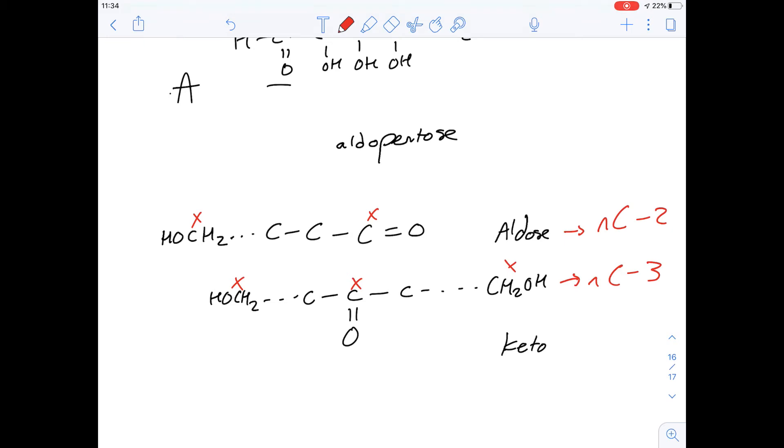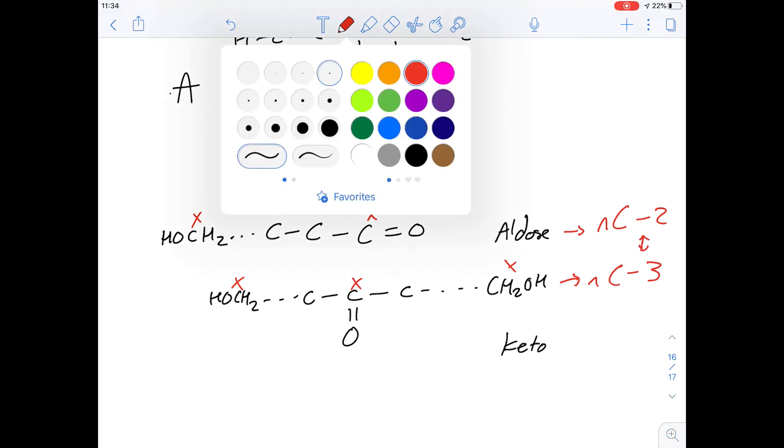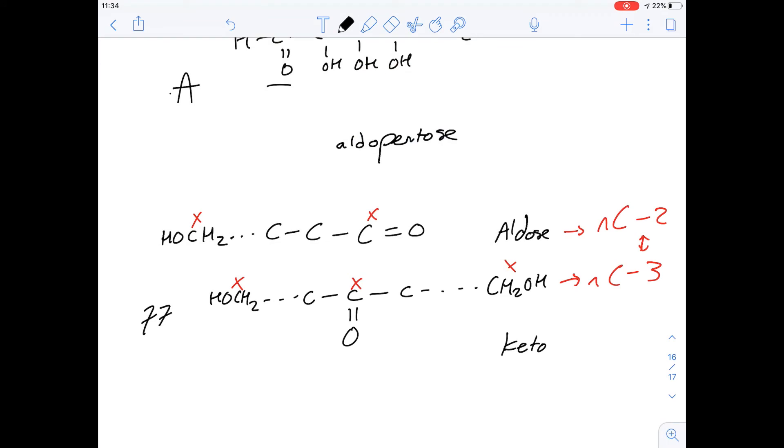So looking at the answers here, we're asked which of the following best describes these monosaccharides, and we know that this aldose will have one more stereocenter than the ketose from this bit here. So that tells us the answer to 77 is going to be B.